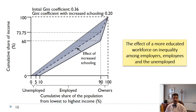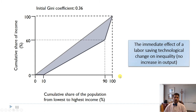This reflects real-world patterns: more educated workers, especially in the United States, get paid significantly more. College-educated workers earn 60–80% more than high school-educated workers.